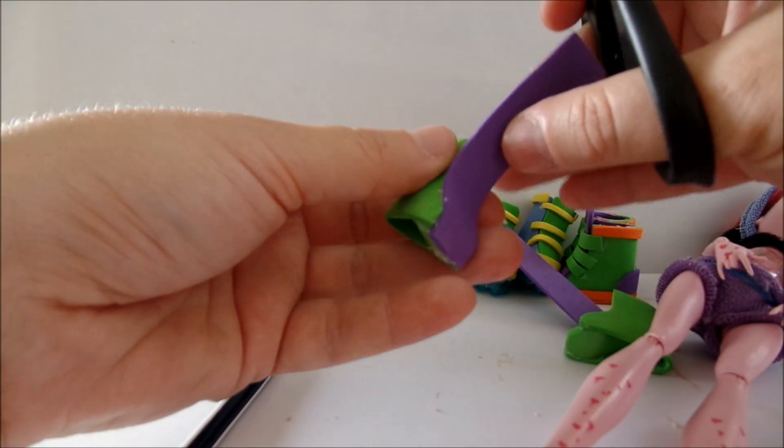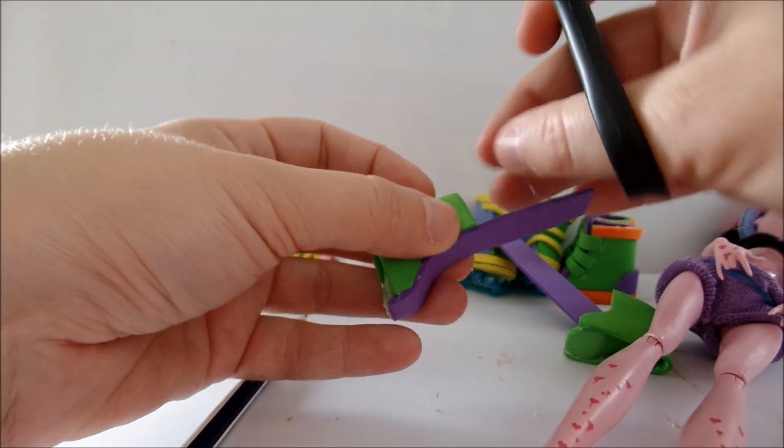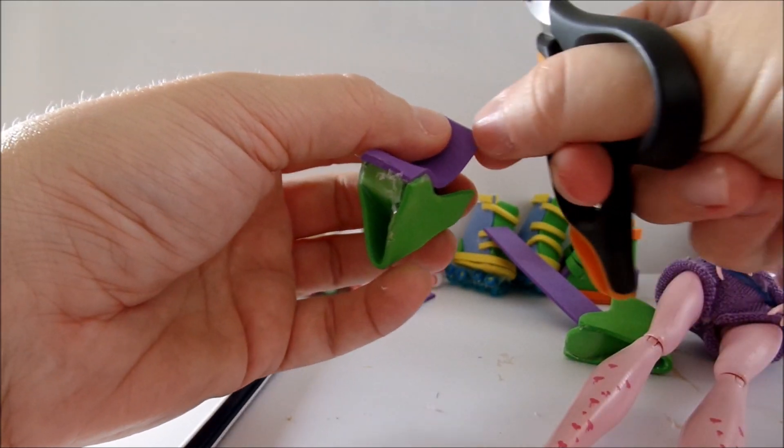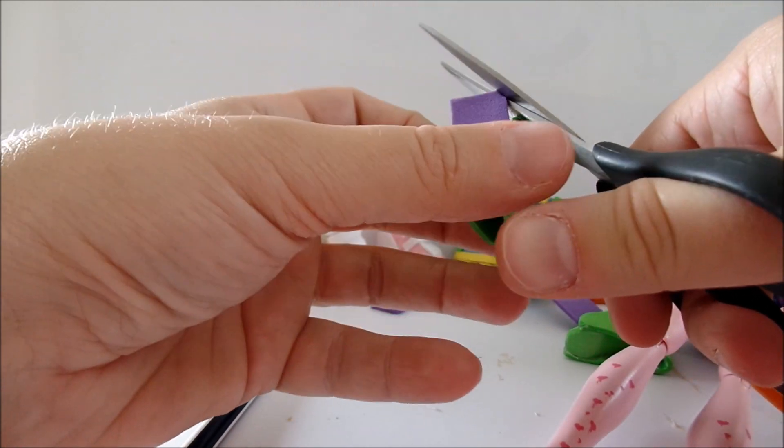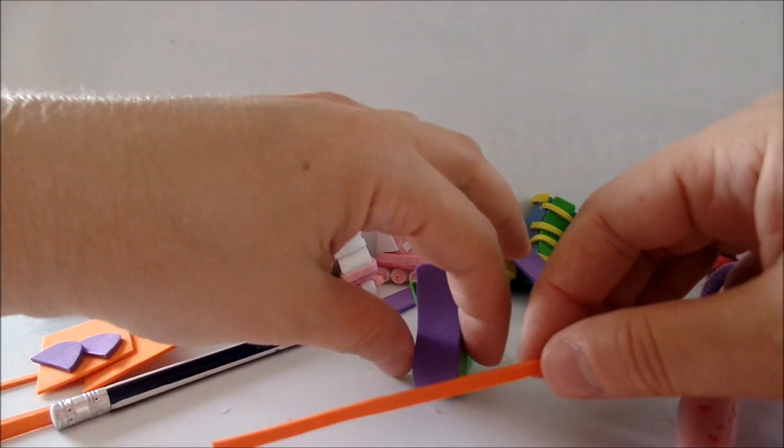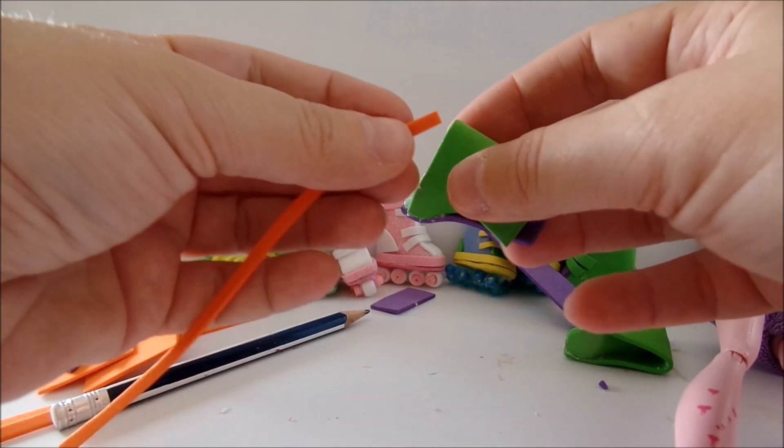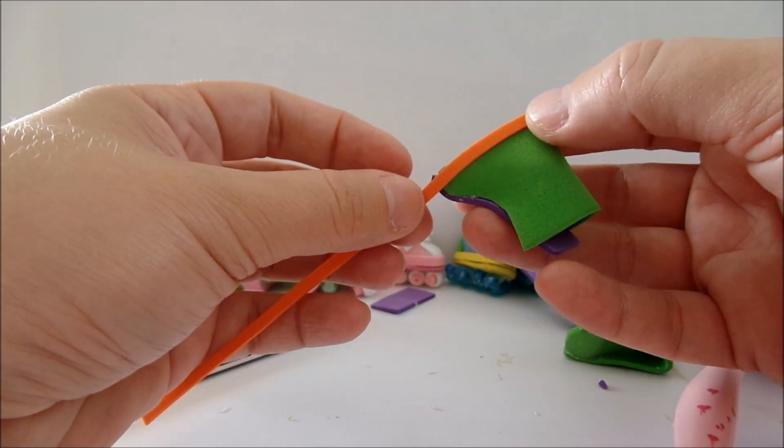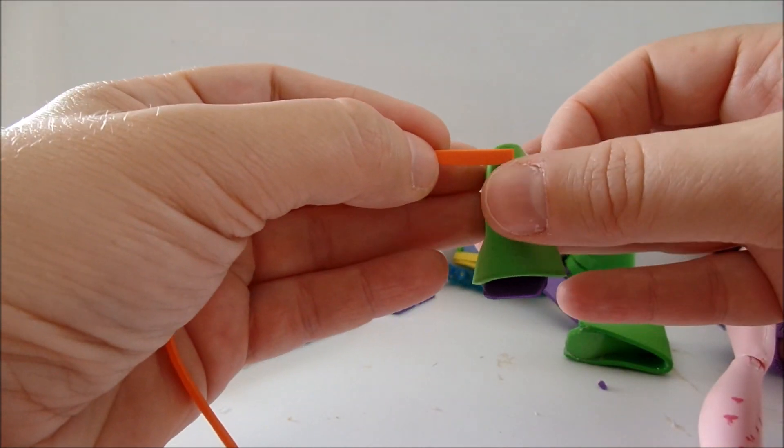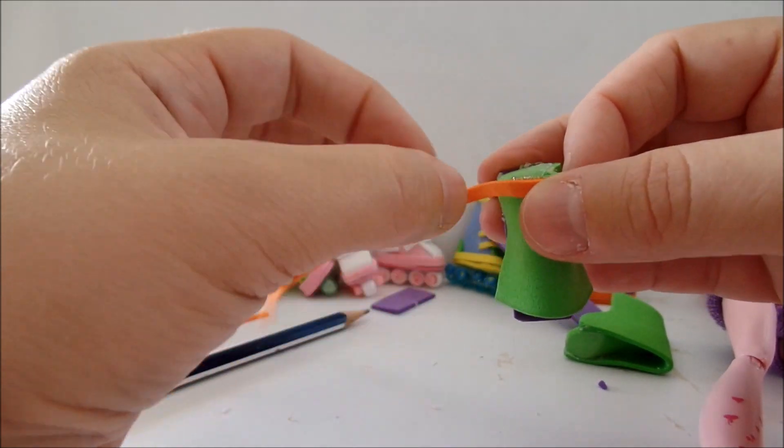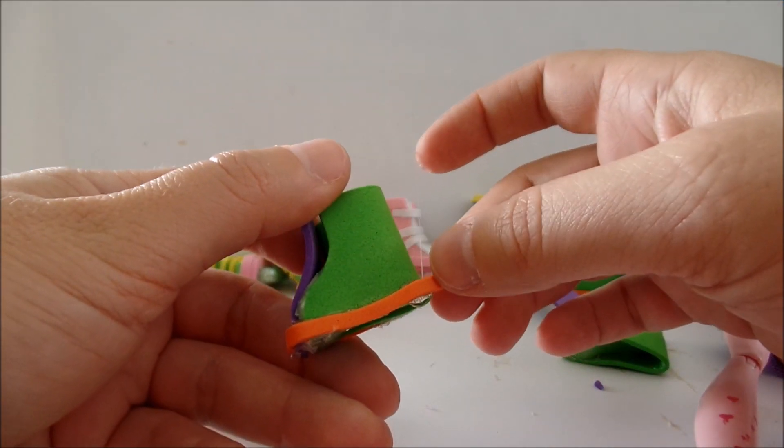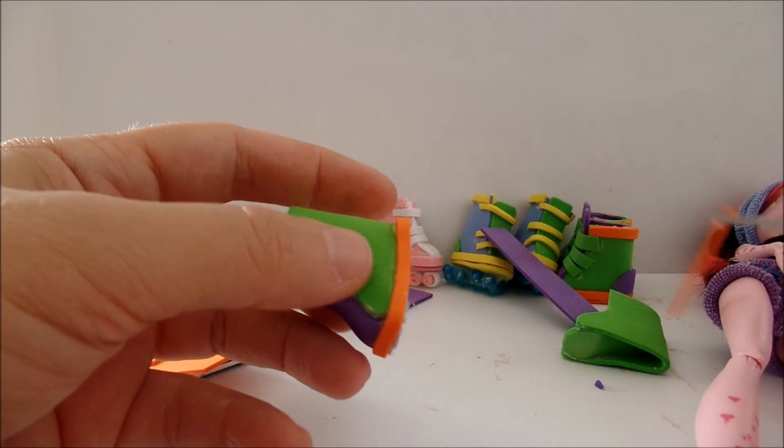I make the tongue a bit higher than the borders of the shoe. Trim off the excess around the edges. Now I take an orange piece of foam and start gluing it around the shoe. Trim off the excess.